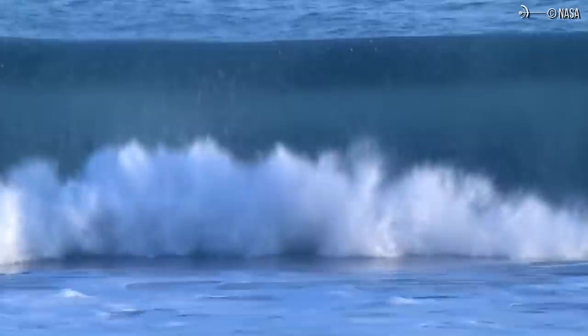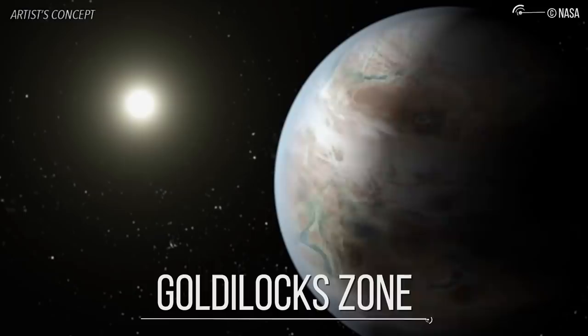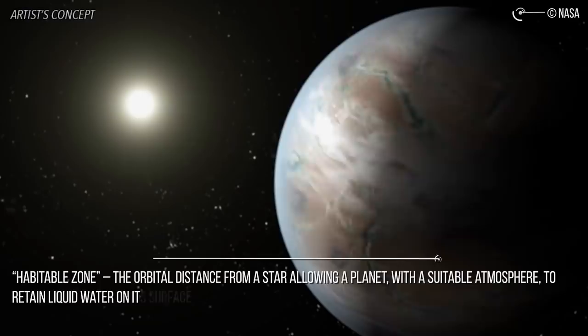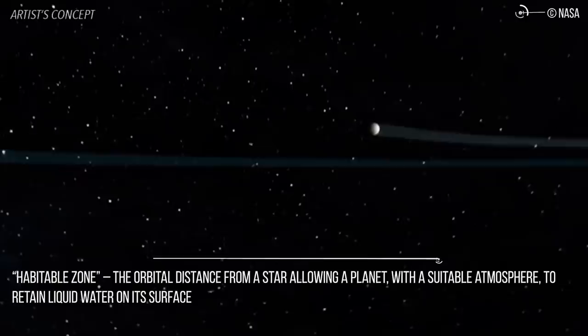And what about potentially habitable? This term has also seen a lot of use in recent years whenever the subject of exoplanets comes up. What it refers to are those exoplanets that have been found orbiting within their star's circumstellar habitable zone, which is sometimes referred to as the Goldilocks zone. But how do we determine habitability? Concepts like the habitable zone, the orbital distance from a star allowing a planet with a suitable atmosphere to retain liquid water on its surface, are helping astronomers sort through the many possibilities to find likelier candidates for life-bearing worlds.